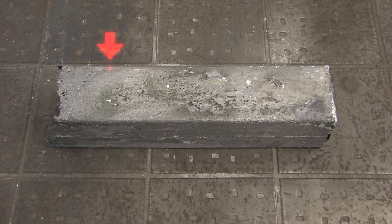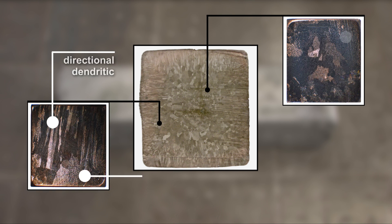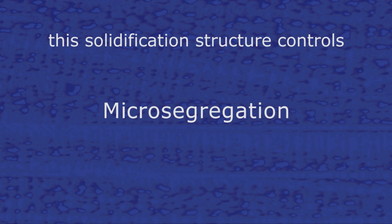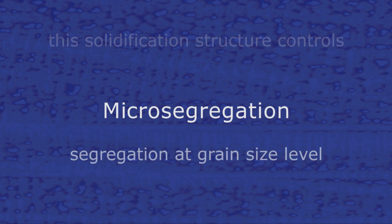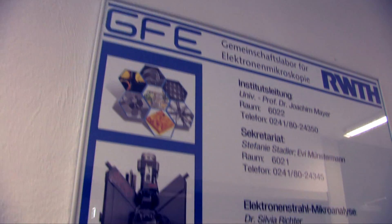Two samples are cut from the top and the bottom of an as-cast block to determine the solidification structure. Depending on cooling rate, the structure shows dendrites at the border and an equiaxed structure in the middle. A sample taken from this dendritic area represents the microstructure.